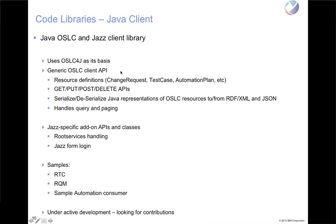It supports all the different types of HTTP APIs you'd expect. Just like OSLC4J on the provider side, it will help with serialization and deserialization of resources to RDF or JSON. It also has the ability to handle OSLC queries and OSLC paging — so if you're doing queries returning large numbers of resources and want to page through them, you don't have to write that code yourself. The client APIs help you build the query and page through the result set. There are also some Jazz-specific add-on APIs that help you deal with the root services API if you're familiar with the Jazz products.